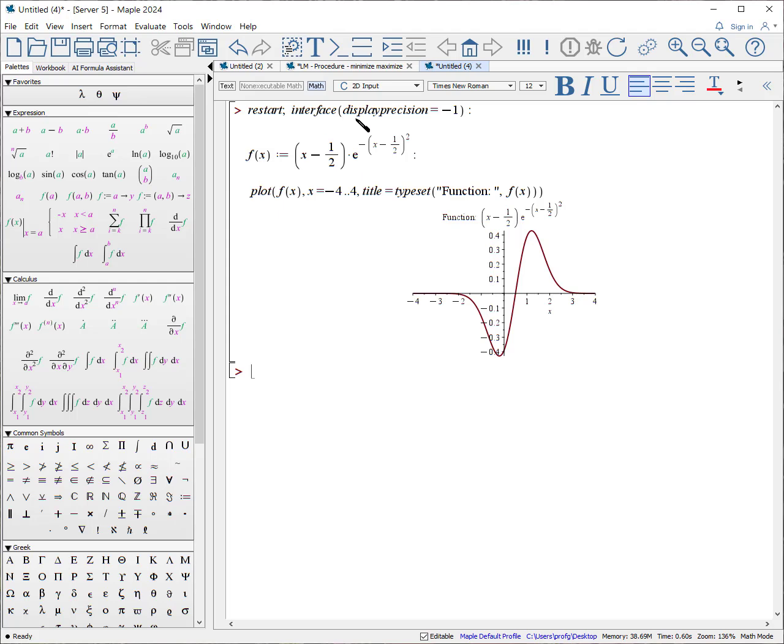We start by setting the interface display precision to minus one. Normally I set it to five, but having it minus one displays all the digits it's going to use.